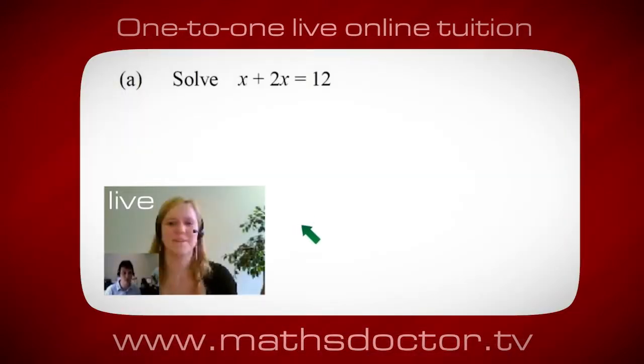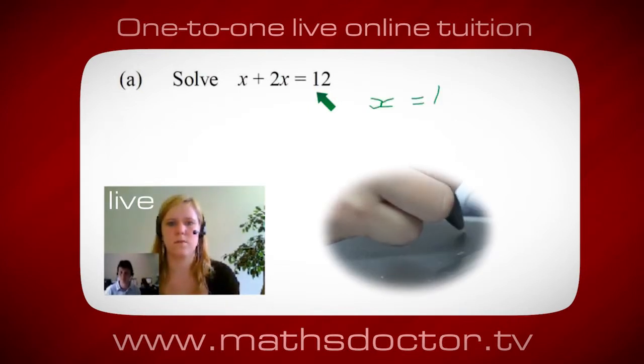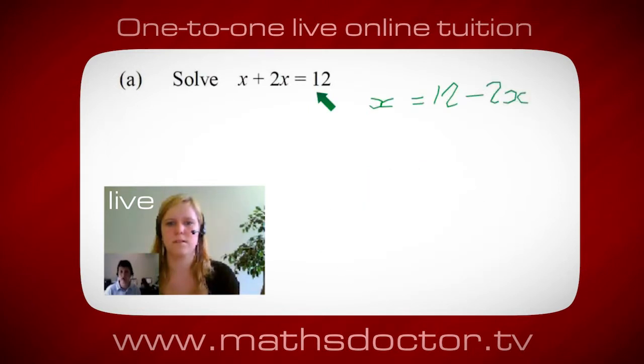Okay, so let's look at this one. Solve x plus 2x equals twelve. So what do you think you do first? Okay, well I want x on its own, so I would put x equals twelve minus 2x. Okay, so a lot of the time we want to get x by itself, but what we want to do first is get all of these x's together. So can you see anything we can do with this? Get all these together in one place.